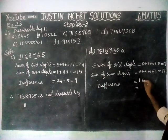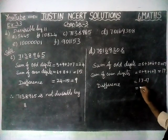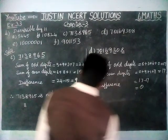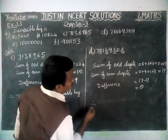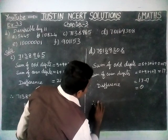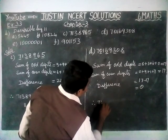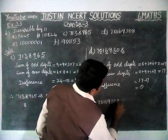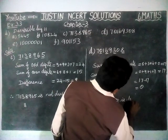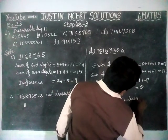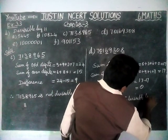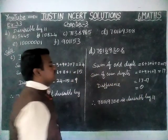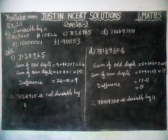17 minus 17 is equal to 0. We are getting the answer 0. Difference is 0, therefore the given number is divisible by 11.